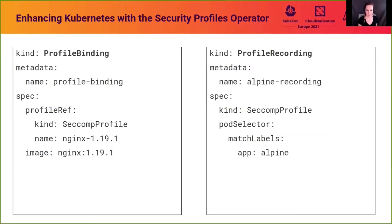We also have more advanced resources to support application developers. The profile binding resource creates a binding between a workload image and a profile resource, so there's no longer any need to change the YAML for a pod to set a security context. Instead, a webhook injects a reference to a profile into the pod security context when you create the pod. This is especially useful if you're running a workload installed from an open source Helm chart — you no longer need to fork or edit the chart; just create the profile binding and the pod and profile will automatically be linked.